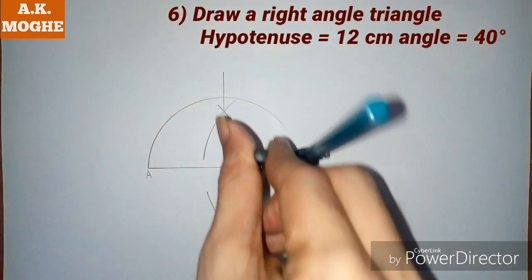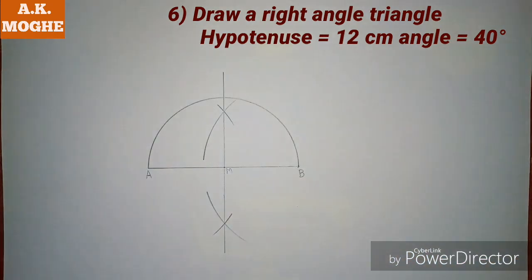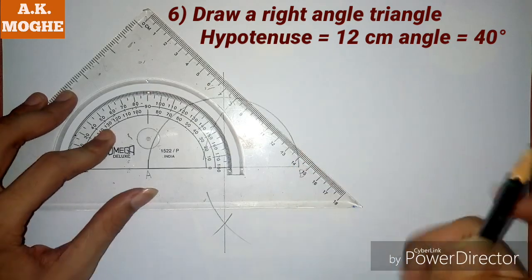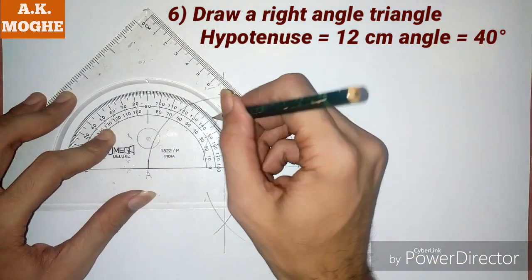Now, the basic procedure is to draw line AB and bisect it into two equal parts. Then take an angle of 40 degrees in a protractor.